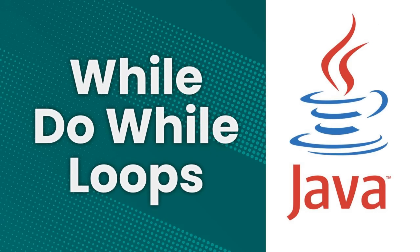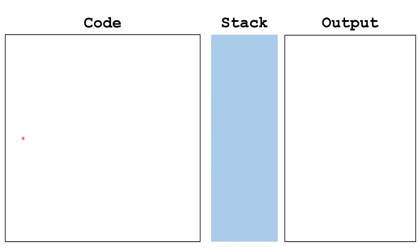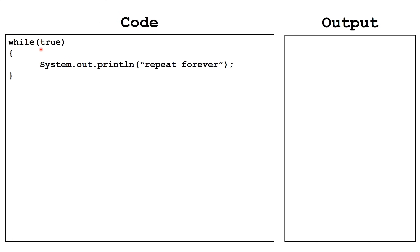Next, we'll talk about while loops and do-while loops. While loops repeat commands while a boolean expression remains true. Do-while loops check the boolean expression at the end of the loop and will always run at least once. Let's look at a very simple while loop. This one — while true — will always evaluate to true, so the body of the loop will execute forever.